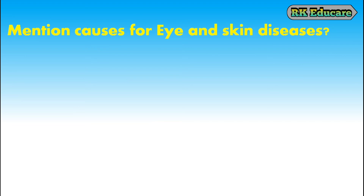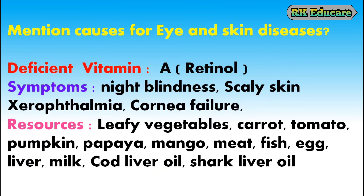Mention the causes for eye and skin diseases. Vitamin A deficiency leads to eye and skin diseases. Vitamin A is called retinol. Symptoms include night blindness, scaly skin, xerophthalmia and cornea failure. Leafy vegetables, carrot, tomato, pumpkin, papaya, mango, meat, fish, egg, liver, milk, cod liver oil and shark liver oil are resources of vitamin A or retinol.